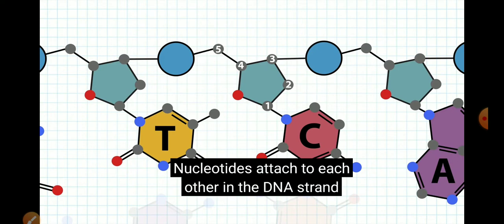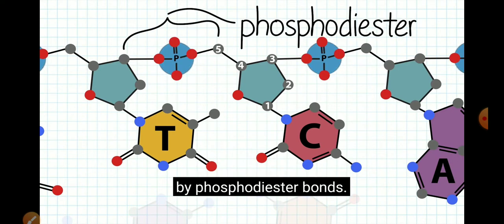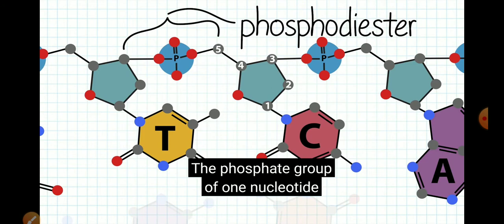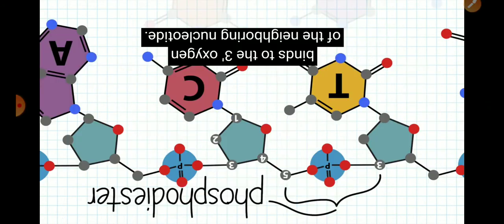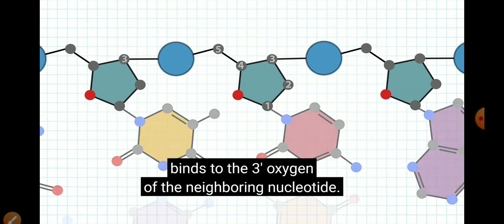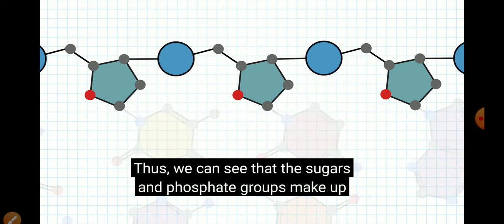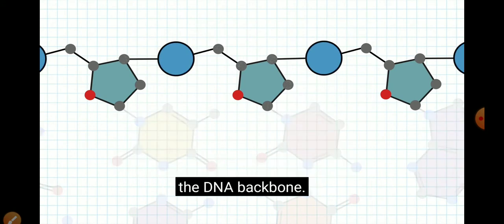Nucleotides attach to each other in the DNA strand by phosphodiester bonds. The phosphate group of one nucleotide binds to the three prime oxygen of the neighboring nucleotide. Thus, we can see that the sugars and phosphate groups make up the DNA backbone.